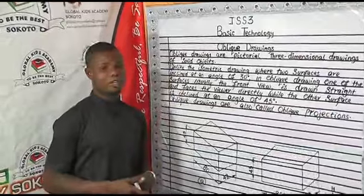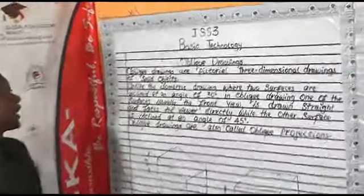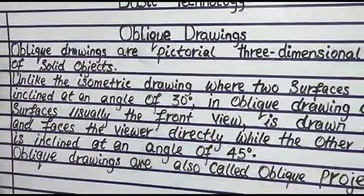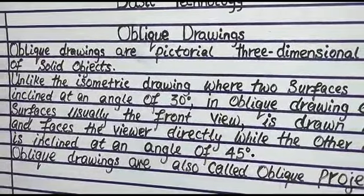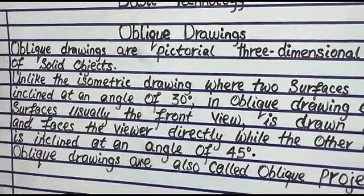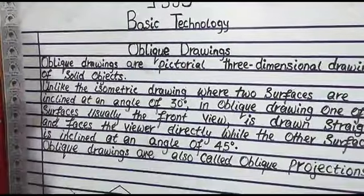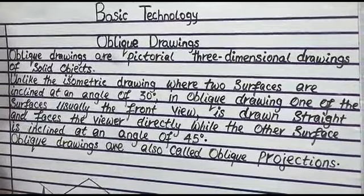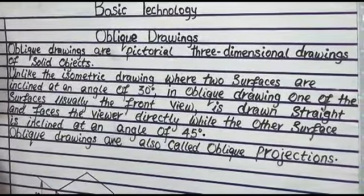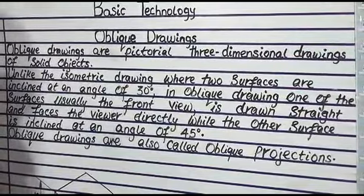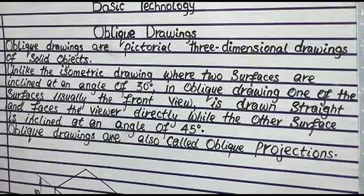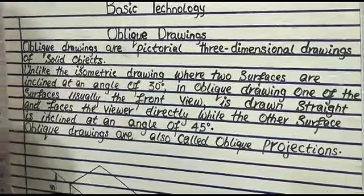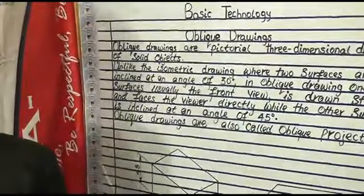What is oblique drawing? Oblique drawings are pictorial three-dimensional drawings of solid objects. Unlike isometric drawing, where the two surfaces are inclined at an angle of 30 degrees, in oblique drawings, one of the surfaces — usually the front view — is drawn straight and faces the viewer directly, while the other surface is inclined at an angle of 45 degrees. We can also call it oblique projection.